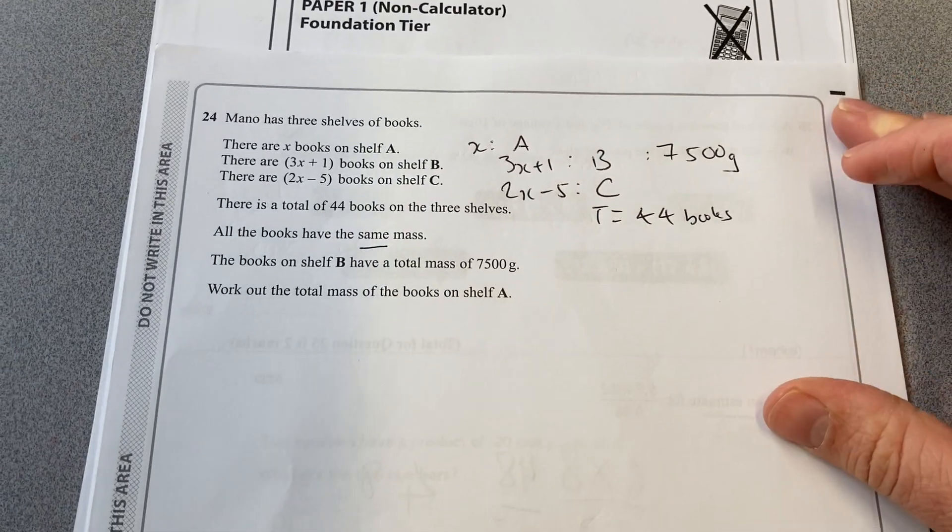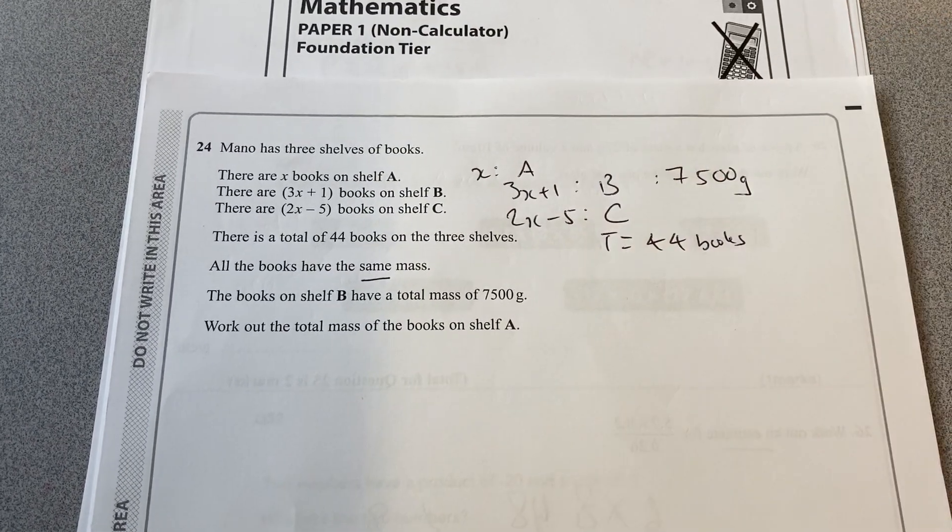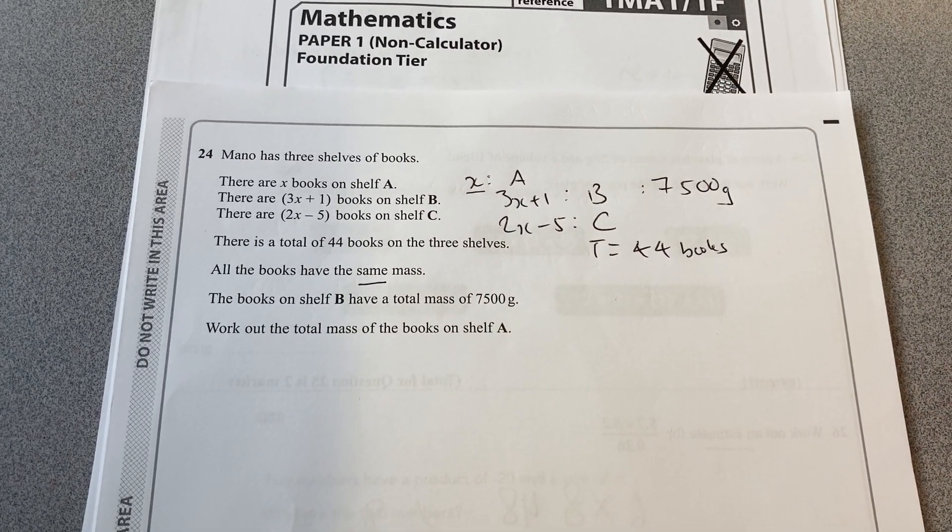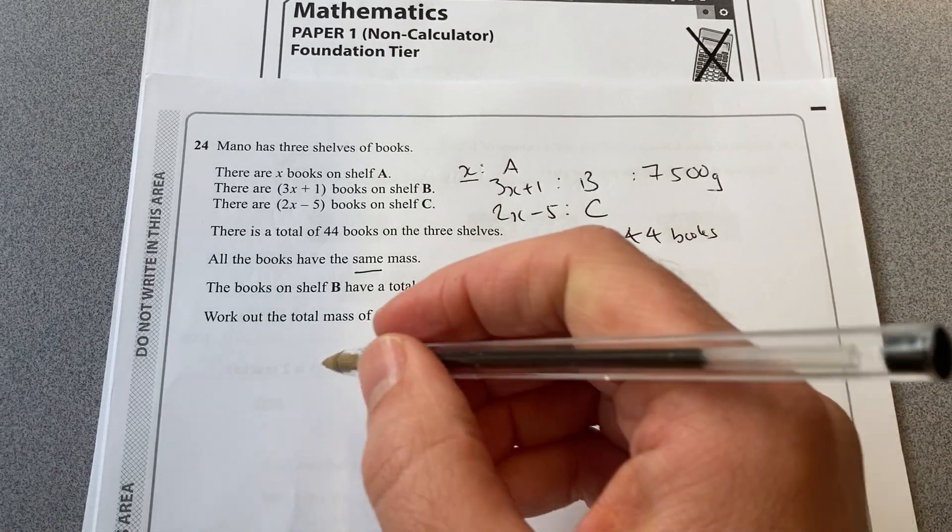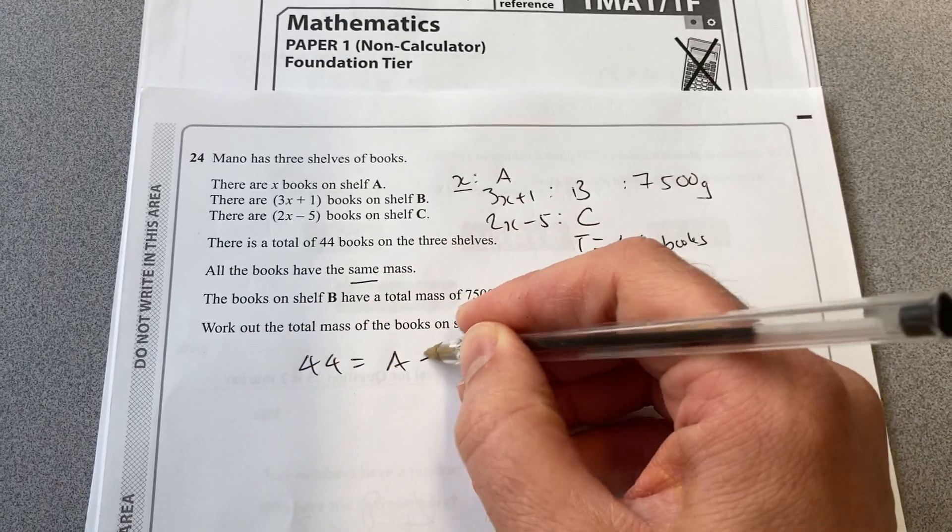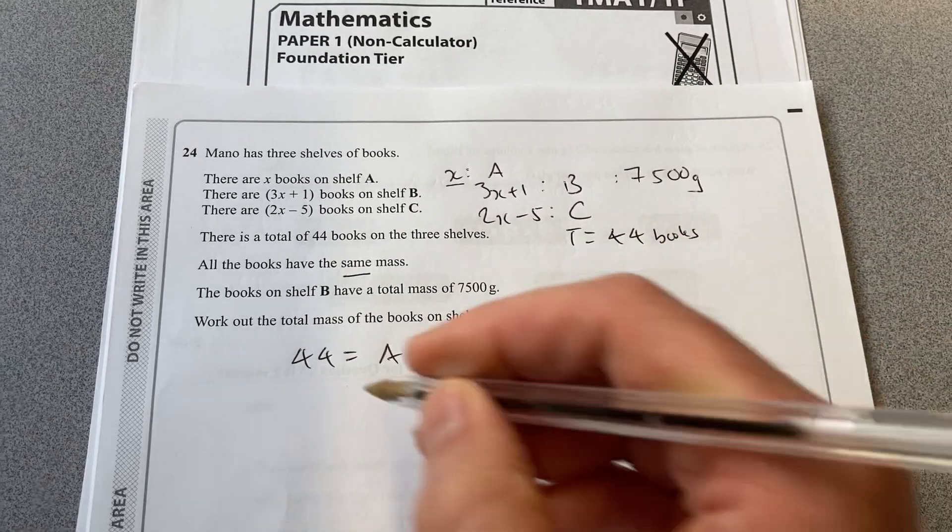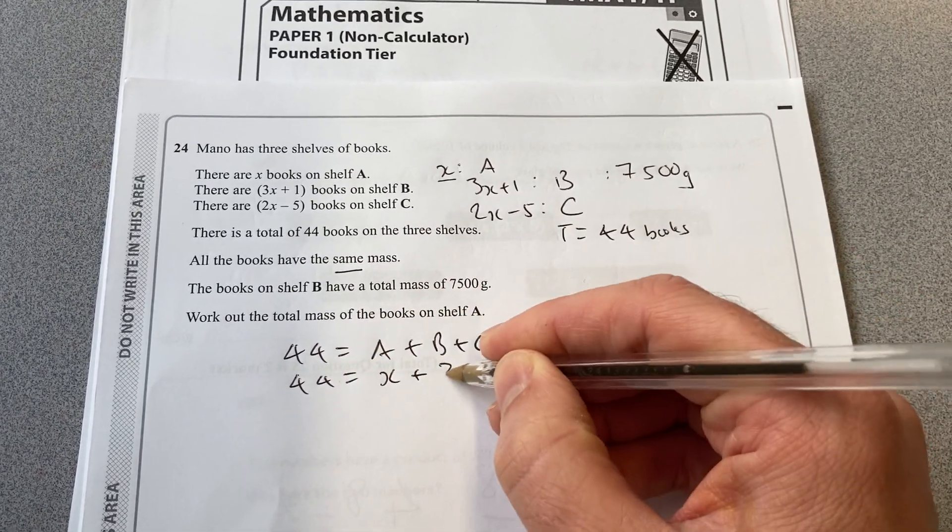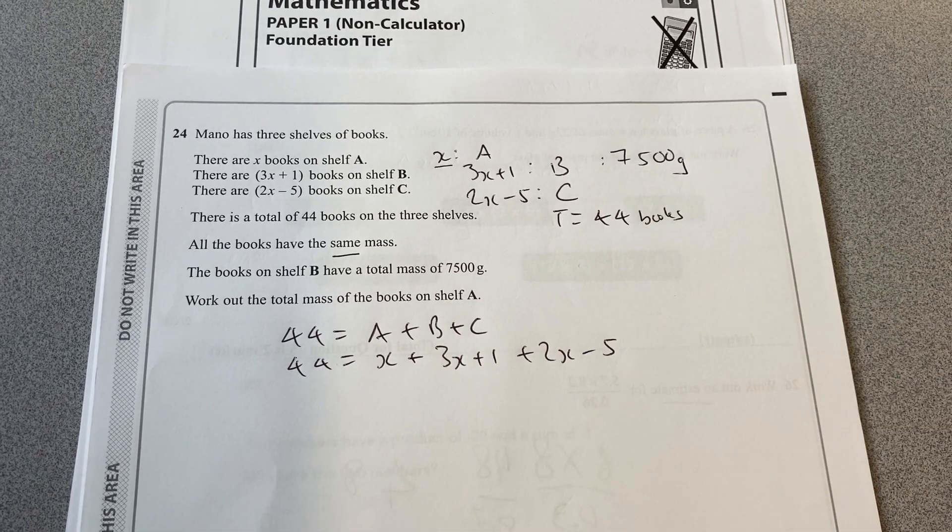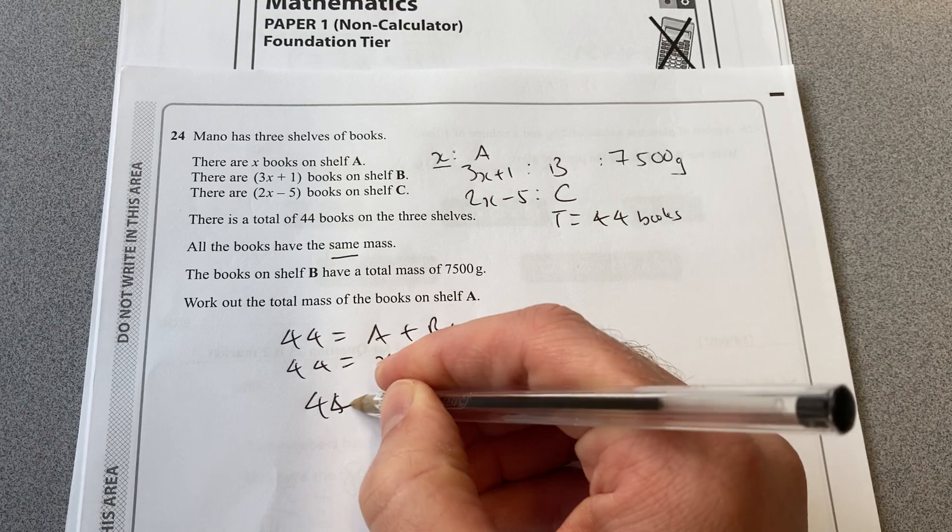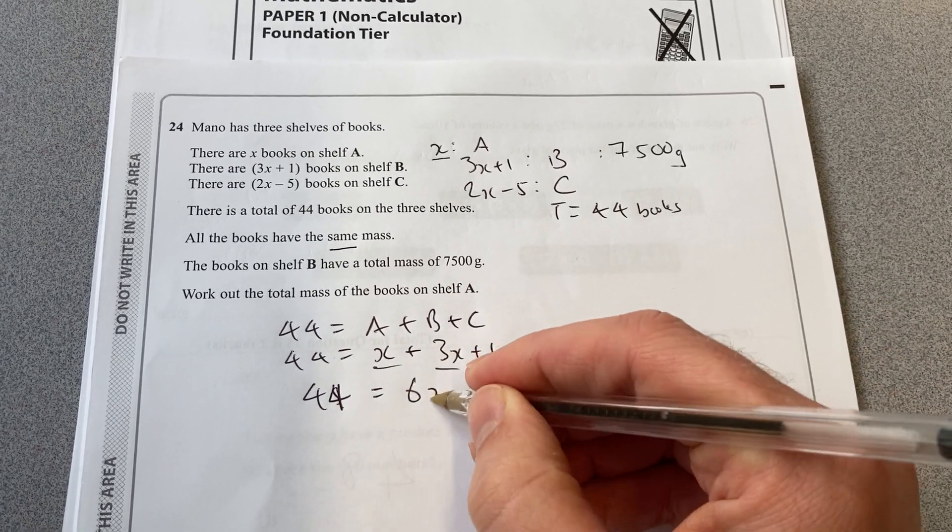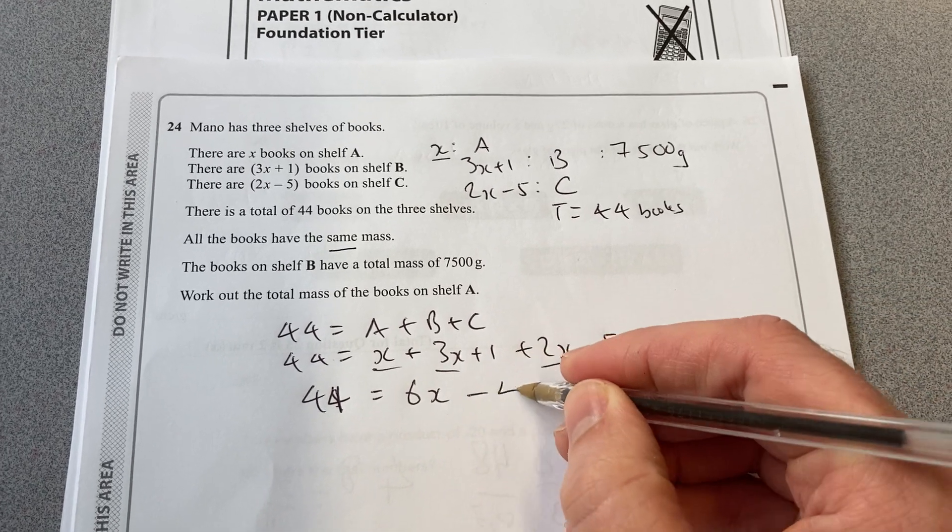We've got to work out the total mass of the books on shelf A. We've got to work out what X is in number of books, and then work out what that is. So let's add up what we know. We know that the total number of books is 44, which is all the books of A plus B plus C. So 44 equals X plus 3X plus 1 plus 2X minus 5. So 44 equals, collect the like terms, 6X minus 4.